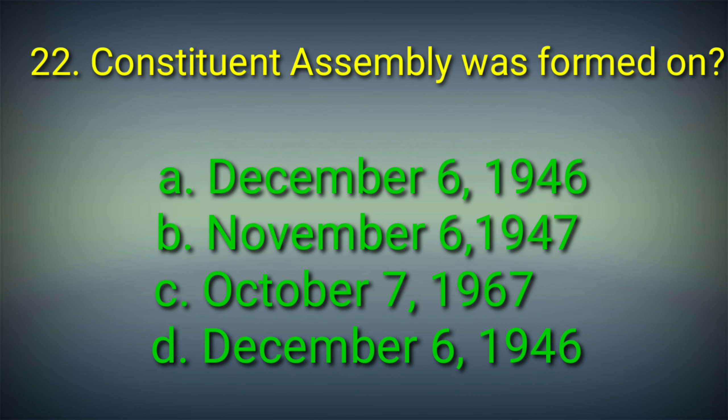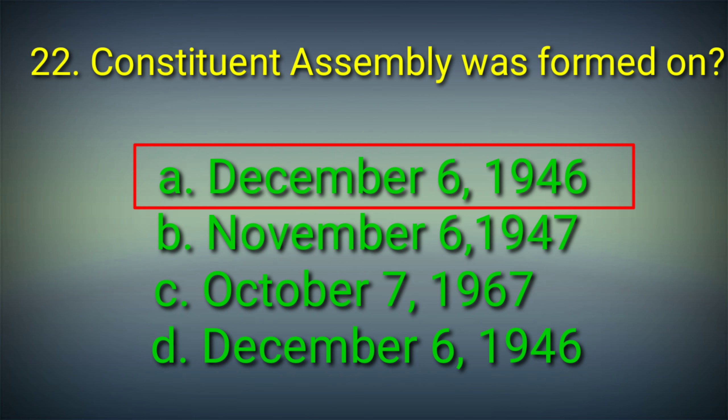22nd question: Constituent Assembly was formed on — Options: A. December 6, 1946, B. November 6, 1947, C. October 7, 1967, D. December 6, 1947. Answer: Option A. December 6, 1946. The Constituent Assembly was formed on December 6, 1946.